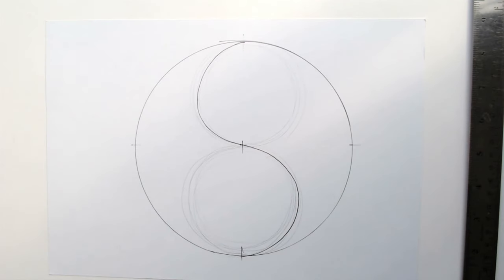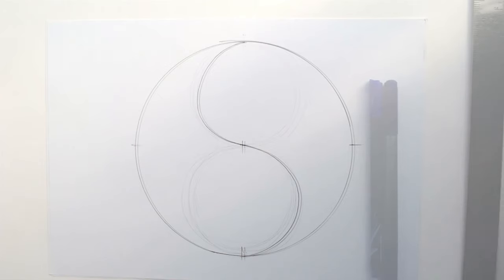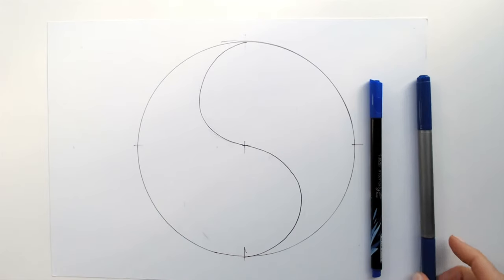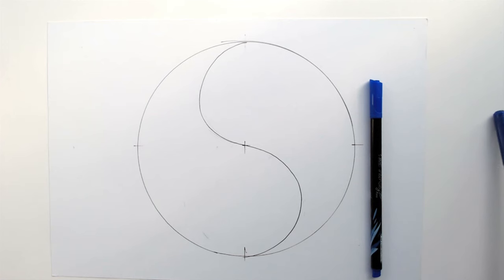We create a shape wave that represents two halves, yin and yang. So we have the basic shape. Now we can erase those construction lines. Since this is about energy, I will use a blue marker, dark blue liner.